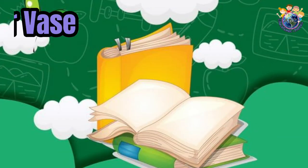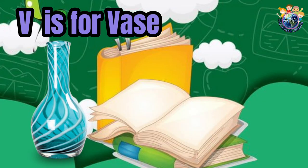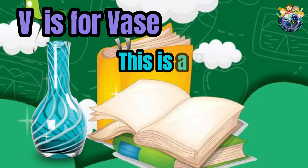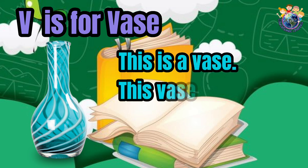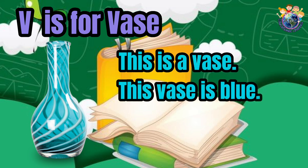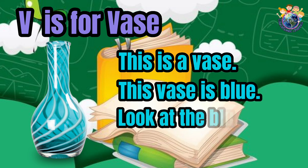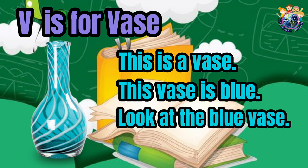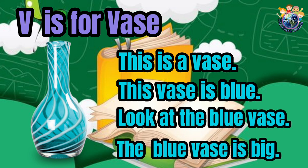V is for vase. This is a vase. This vase is blue. Look at the blue vase. The blue vase is big.